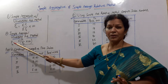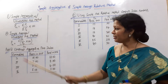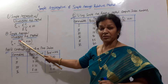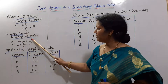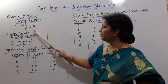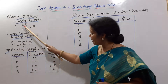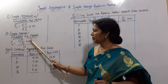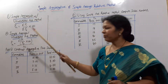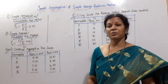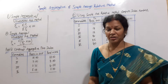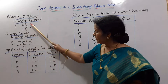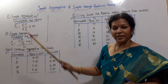We can use the simple aggregative method. For the simple average formula, P01 is equal to sigma of (P1 by P0 into 100). That is the total, which is sigma P1 by P0 into 100, divided by n. That is the average — everything divided by n.